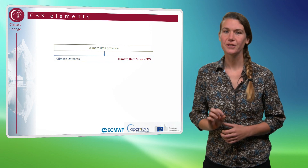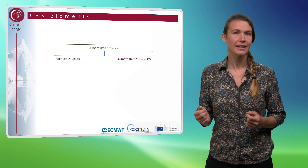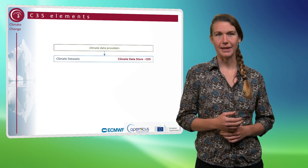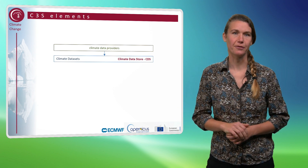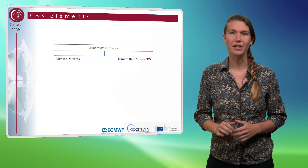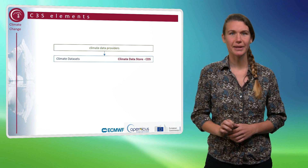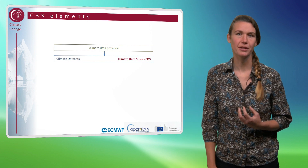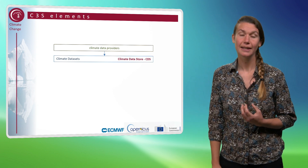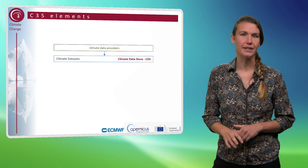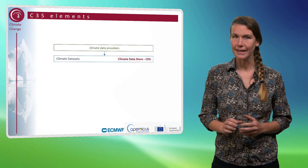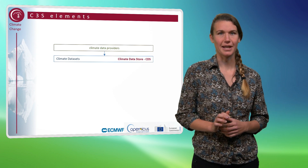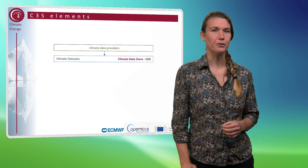C3S is first of all about climate data. Climate data will be provided on an operational basis by a number of climate data providers. There's guaranteed budget for this by European law. This is very different from the past, where we often had project-based funding and data continuity was lacking at times. Now there's direct funding of operational services for climate data, so that's a great improvement.